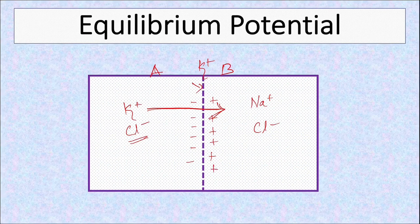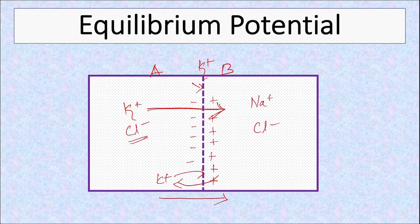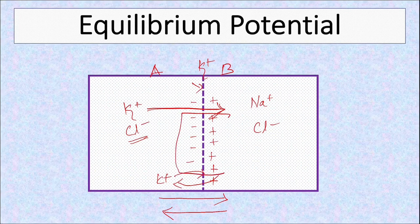As more positive charge accumulates, it prevents the positive ion from entering from this side and it will pull back the potassium. So concentration gradient drives the potassium from A to B, and electrical gradient drives the potassium B to A. When these are equal and opposite, there will not be any net movement of potassium ions, and the potential difference developed at this stage is called the equilibrium potential.